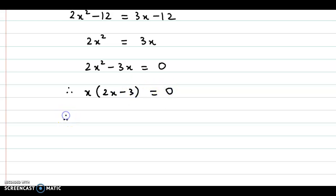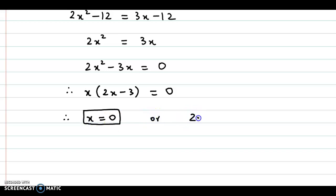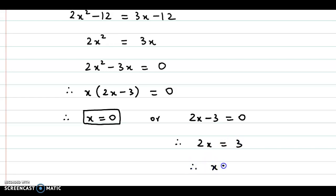Therefore, we have either X is equal to 0, or if we consider 2X minus 3 is equal to 0, then 2X is equal to 3, therefore X is equal to 3 by 2. So the two answers are 0 and 3 by 2.